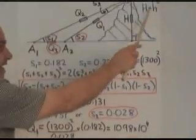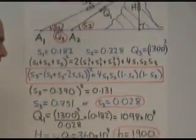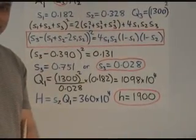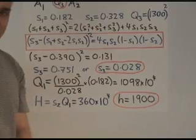So, to get the height, little h, we just take the square root, and that's 1900. So, we've solved for the height of the mountain.